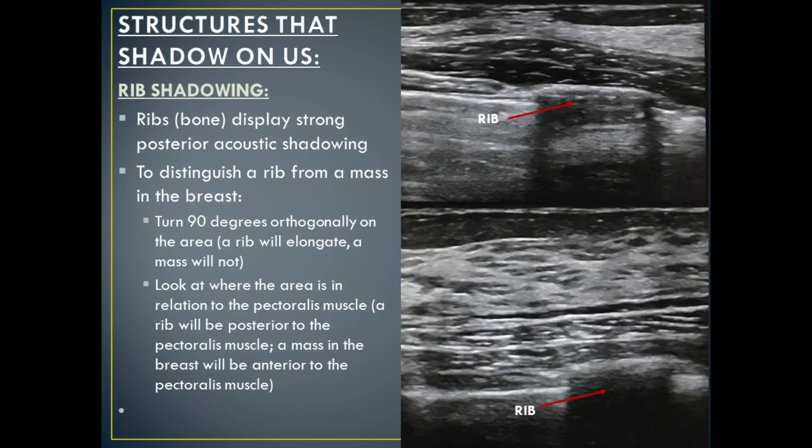Another structure that displays posterior shadowing on ultrasound are ribs. Ribs, which are bone, display strong posterior acoustic shadowing. To distinguish a rib from a mass in the breast, turn 90 degrees orthogonally on the area — a rib will elongate, while a mass will not. Also, look at where the area is in relation to the pectoralis muscle: a rib will be posterior to the pectoralis muscle, whereas a mass in the breast will be anterior to it.